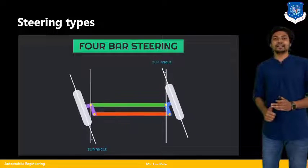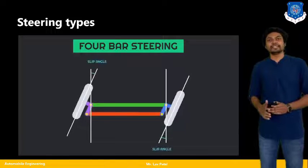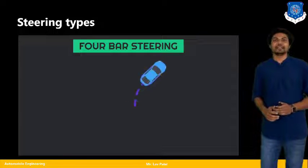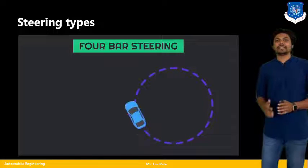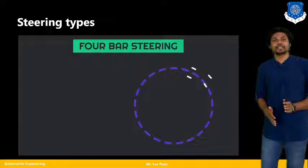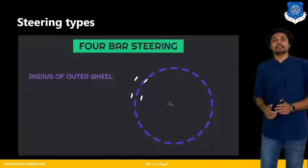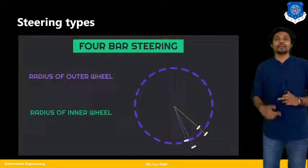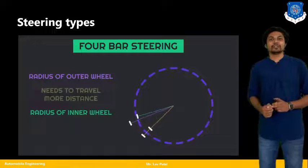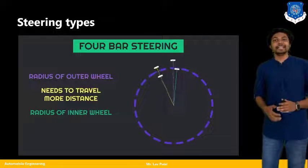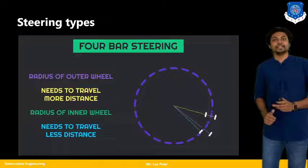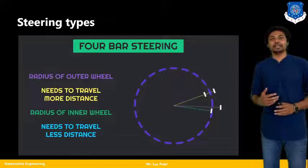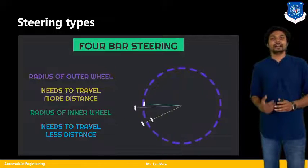Here you can see the difference between the angle of the inner wheels and outer wheels. The inner wheel has a larger turning angle and the outer wheel has a much smaller angle. One example is given for a car rotating towards the right side — the right wheel is the inner wheel and the left wheel is the outer wheel. At the instantaneous center point, the overall vehicle turns accordingly. The purple line you can see is the radius of the inner wheel. The outer wheel needs to travel more distance, while the inner wheel needs to travel less distance. These are the two main differences between inner and outer wheels — how they travel at different angles.